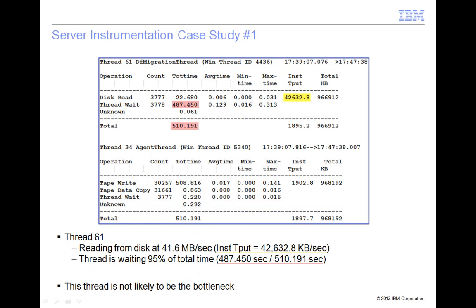First, we will look at the disk read operations from thread 61. We can see that the instantaneous throughput for the reads is 42,632.8 kilobytes per second, or 41.6 megabytes per second.